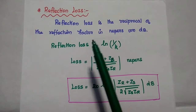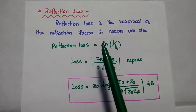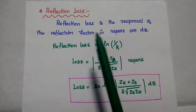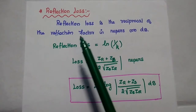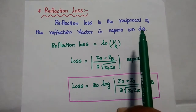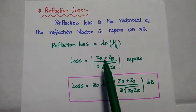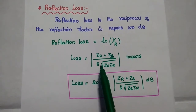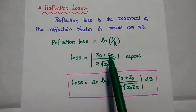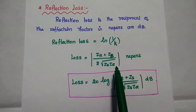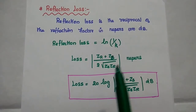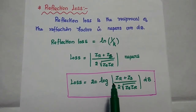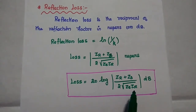The last one is reflection loss. As we know, reflection is an unwanted echo signal at the receiving end due to mismatched condition. The reflection loss is the reciprocal of the reflection factor, expressed in nepers or dB. So small k represents the reflection factor. We can write the formula as modulus of ZR plus ZS divided by 2 into square root of ZS into ZR. Its unit is nepers. If you want to calculate the loss in dB, we can use the formula 20 log of modulus of ZR plus ZS divided by 2 into square root of ZS times ZR, with unit dB.